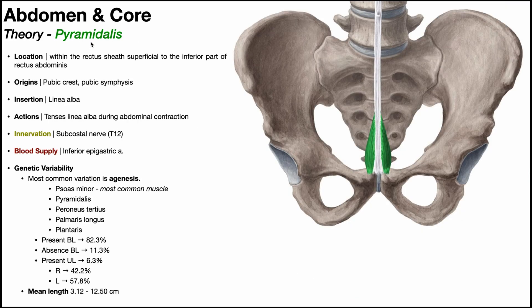The first muscle we're going to look at is the pyramidalis. As you can see here in green, compared to the size of the pelvis, the pyramidalis is a very small muscle. It's found within the rectus sheath, superficial to the inferior part of the rectus abdominis muscle.